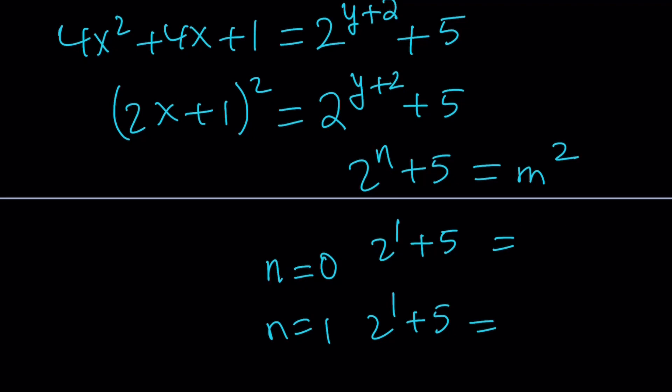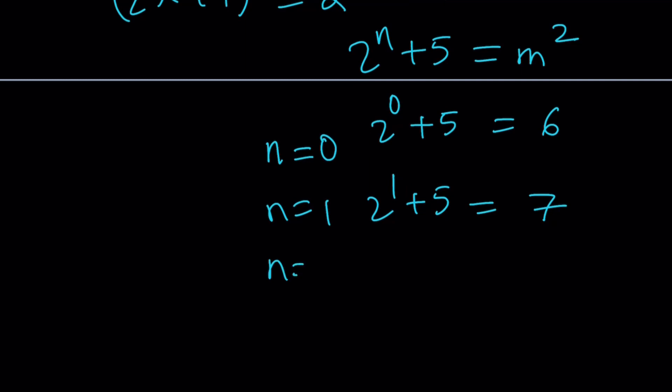If n is equal to 2, you get 2 squared plus 5, which is 4 plus 5. And that's a 9. Yay. We got a perfect square. So n equals 2 seems to work.